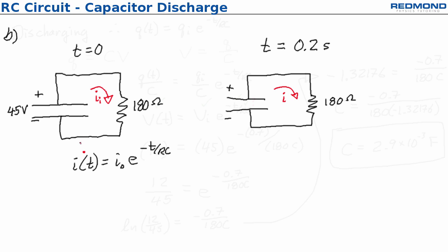Now looking at this equation I don't know the current at 0.2 seconds. I don't yet know the initial current. What I do know is the time and I know the resistance and now I know the capacitance. So if I'm going to solve for the current at 0.2 seconds I'm going to have to find the initial current first.